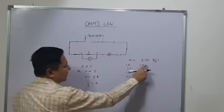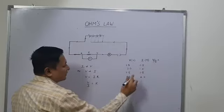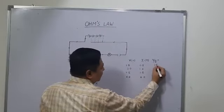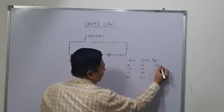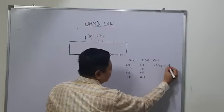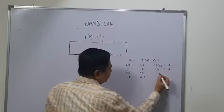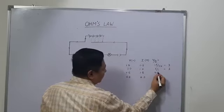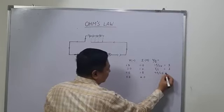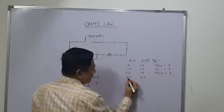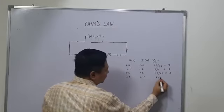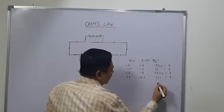Now here we are taking the ratio V/I. So it is 1.5/0.5, which gives us 3. Then 3/1, which also gives 3. Then 4.5/1.5, that is 3, and 6/2, that is also 3.